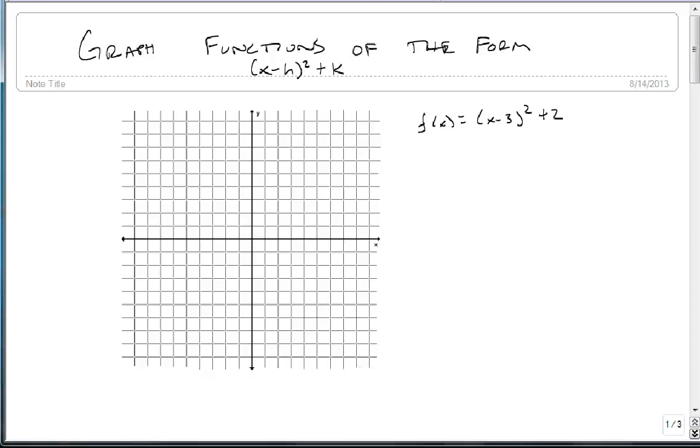Let's now combine our vertical and our horizontal shifting together and attempt them in the same problem. So what we're going to do is we're going to look at our f of x equals x minus 3 squared plus k.